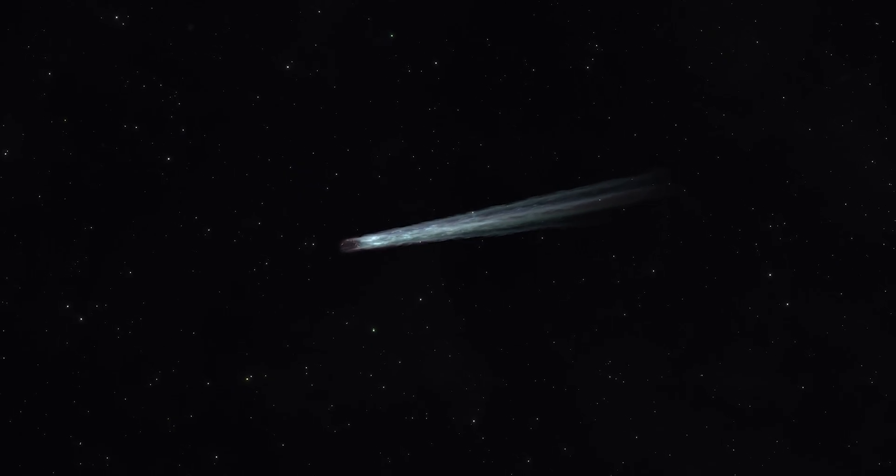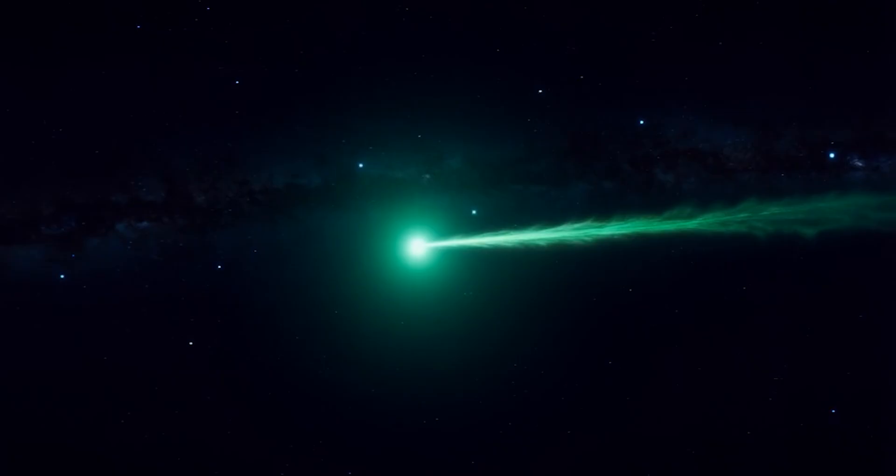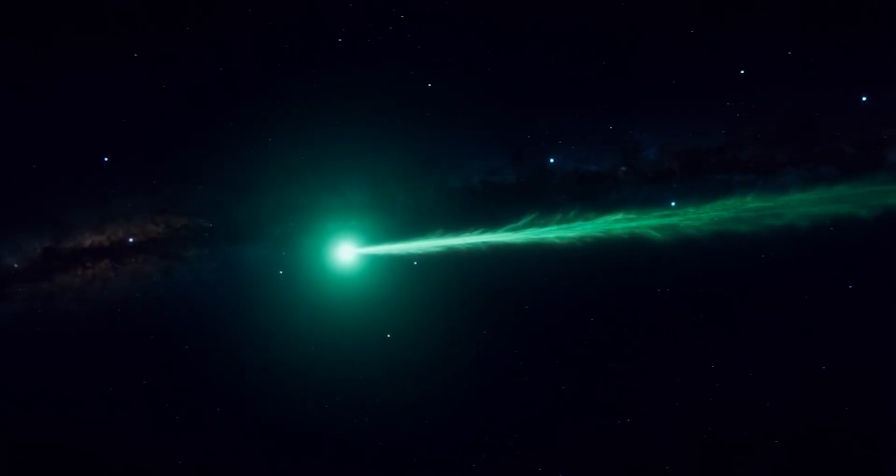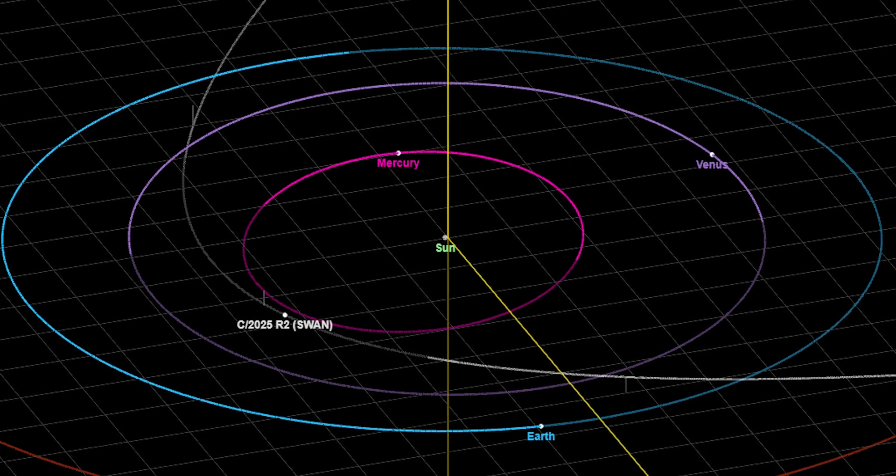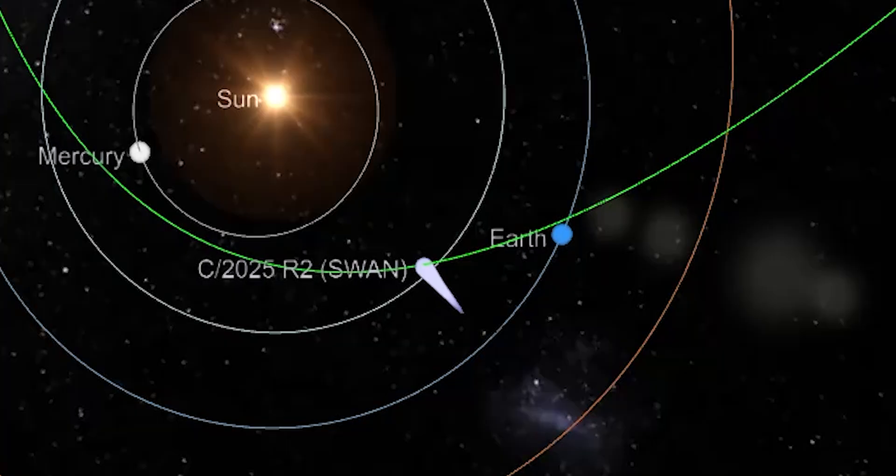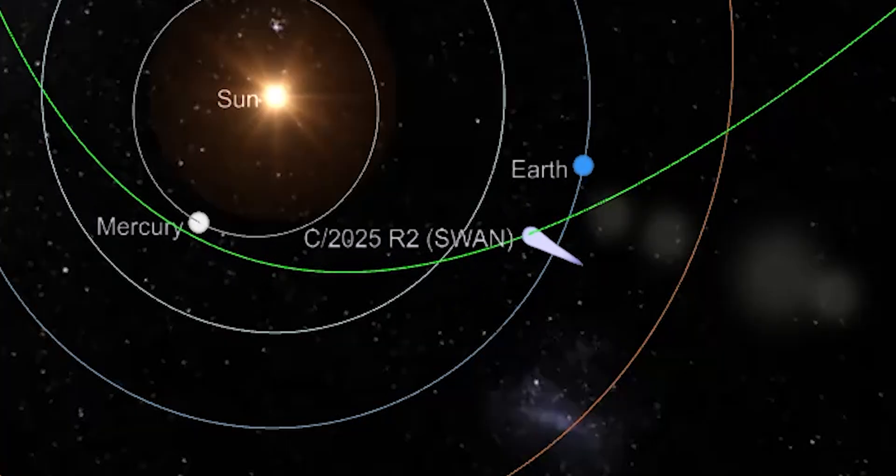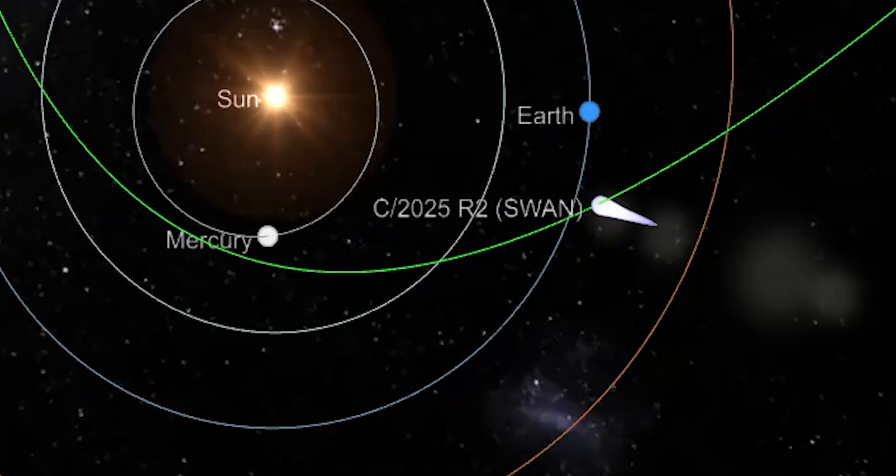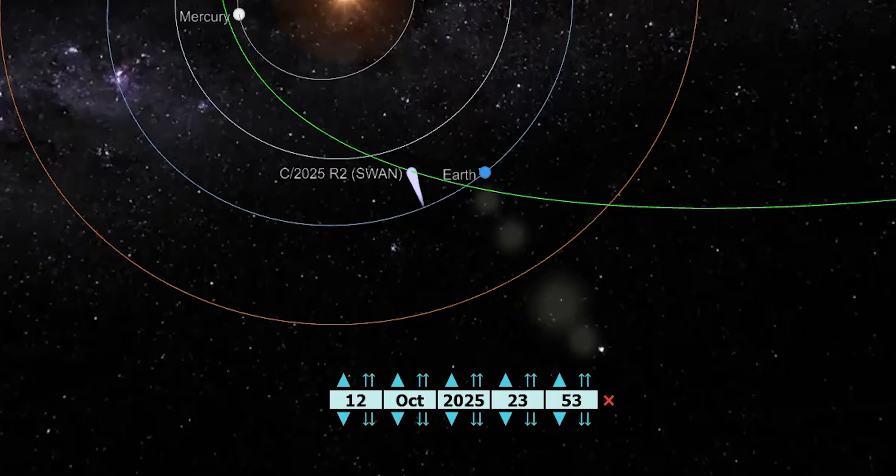Comets don't have to hit Earth to matter. Their danger often lies in what they leave behind. When astronomers mapped Swan's orbit, one number stood out: its inclination, barely 4.5 degrees above Earth's orbital plane. That meant this enormous, active body wasn't slicing steeply through the solar system like most long-period comets. It was skimming through our neighborhood, gliding almost along the same highway traveled by planets and satellites. That geometry changes everything.